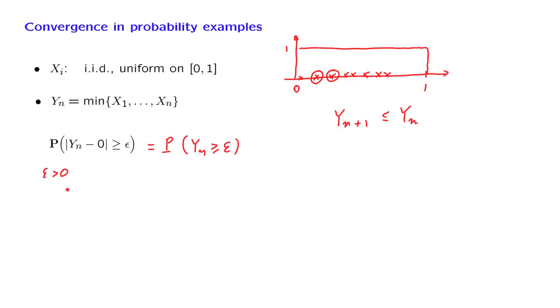Now let us distinguish between two cases. If epsilon is bigger than 1, we're asking for the probability that Yn is larger than or equal to a certain number epsilon that's out there. But this probability is 0. There is no way that the minimum of these uniforms will take a value that's larger than some epsilon that's larger than 1. So in that case,